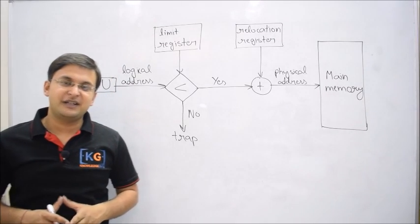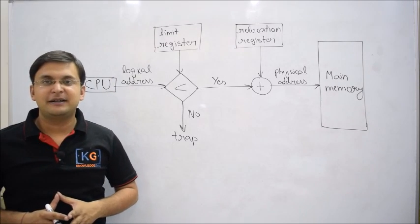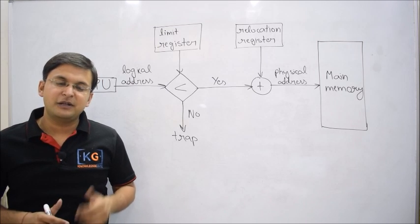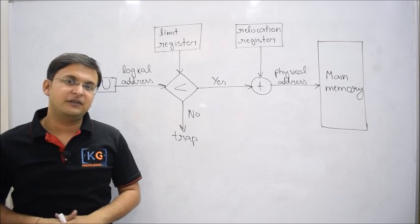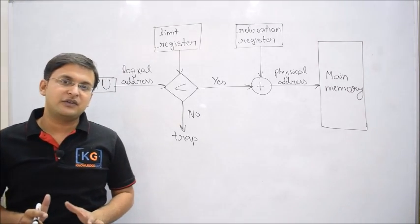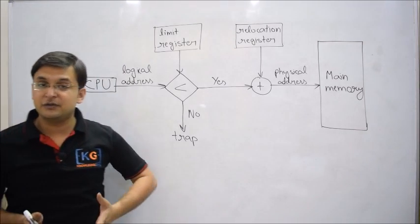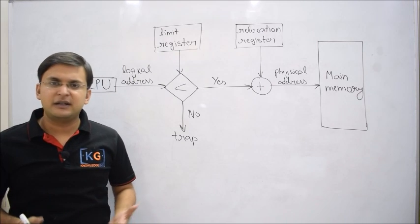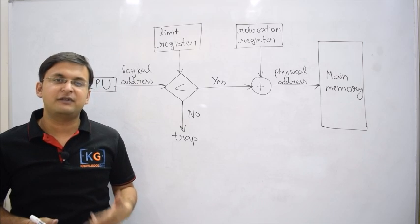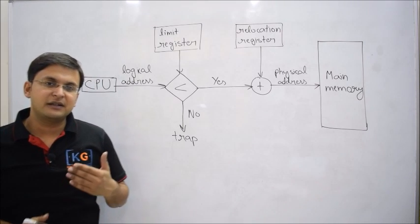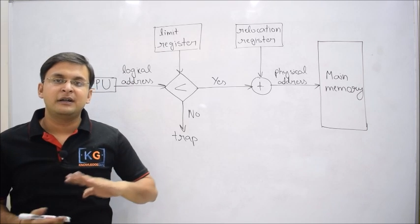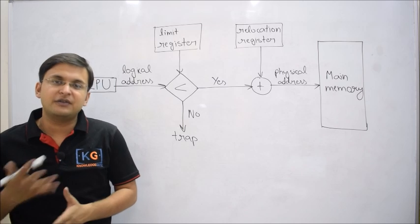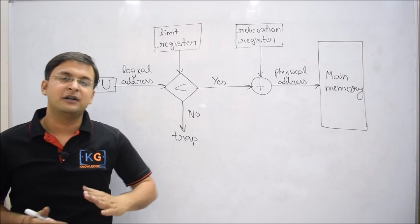Hello friends. In this series of videos on memory management, we have been discussing contiguous memory allocation. I have discussed one major issue which is the space allocation policy. We understood that contiguous memory allocation can use either fixed size partitioning or variable size partitioning, with three standard algorithms: best fit, first fit, and worst fit. Now in this video we are discussing the second major issue, which is address translation — how the logical address generated by the CPU is translated into a physical address.